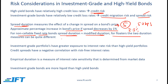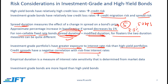From an exam perspective, if you are given both spread measures you should always use spread duration. Investment grade portfolios have greater exposure to interest rate risk than high yield portfolios, because credit spreads have a negative correlation with the risk-free rate. If we want to measure the overall impact on price given a change in interest rates, we can use empirical duration — a measure of interest rate sensitivity determined from market data, normally using a regression of price return versus changes in the benchmark interest rate.